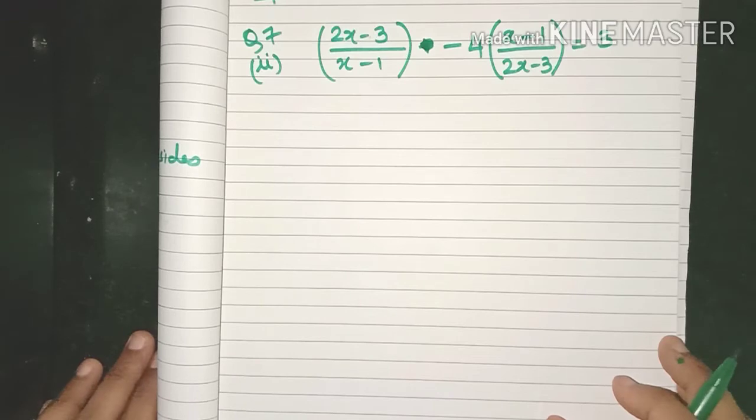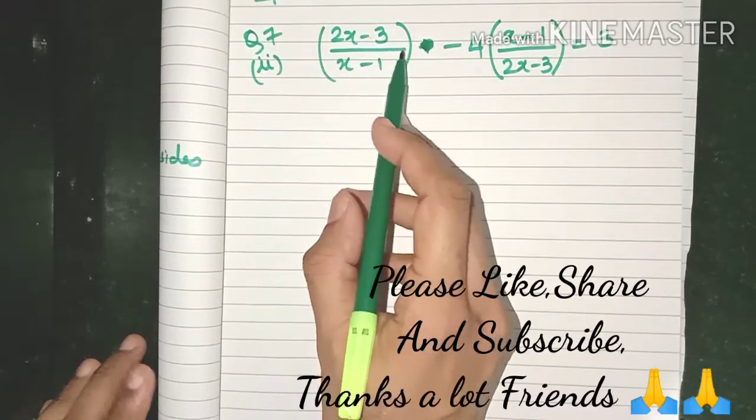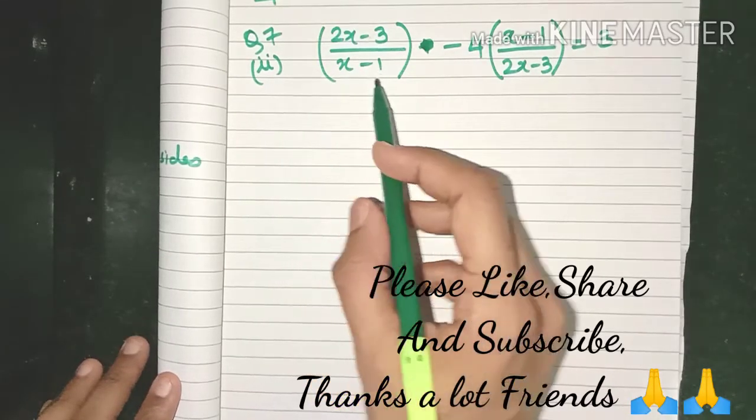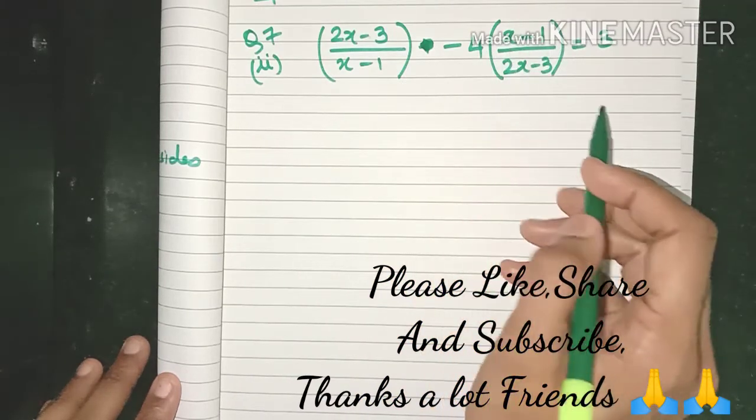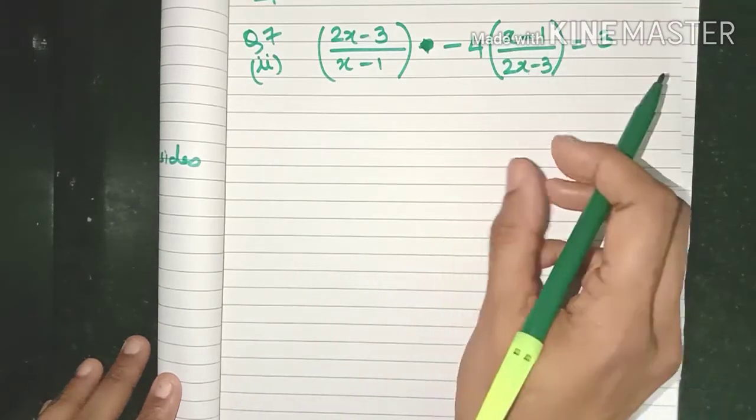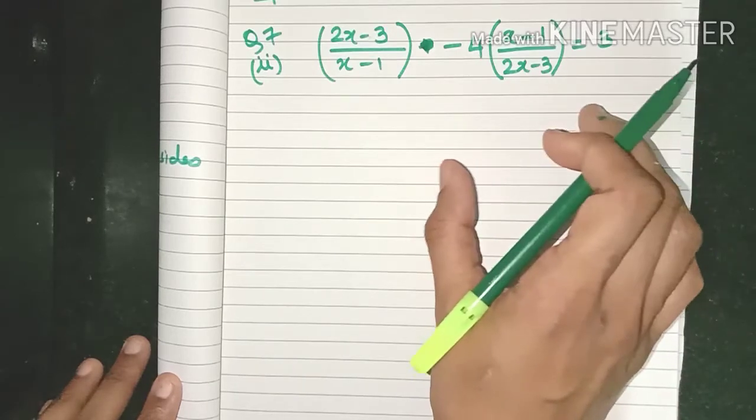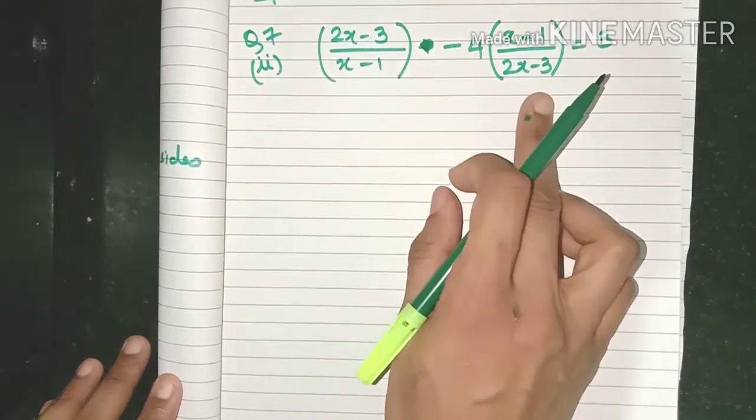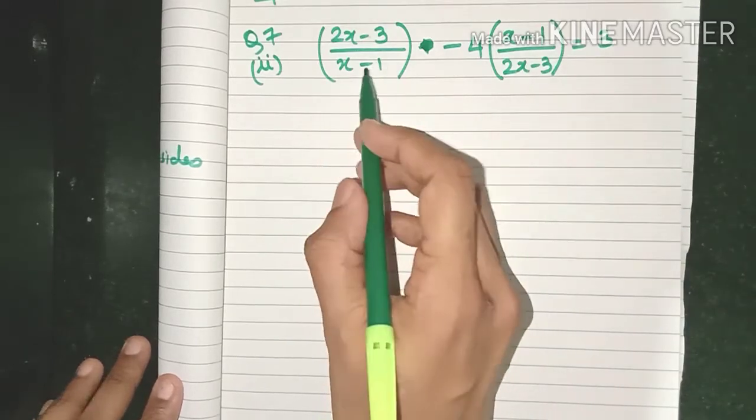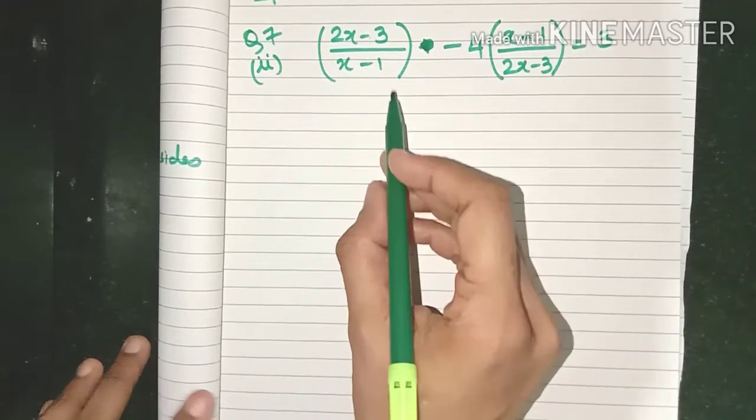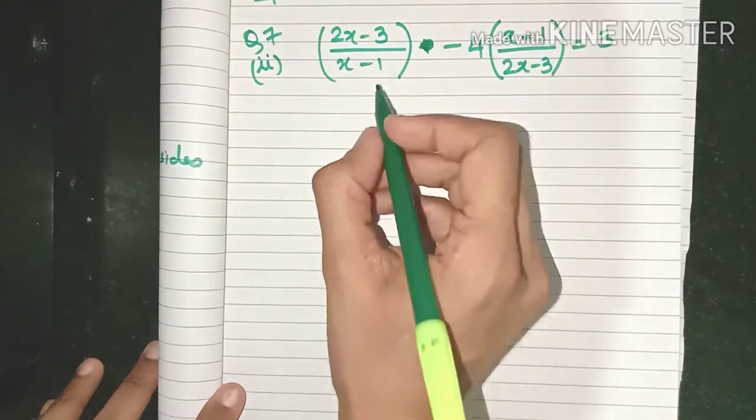Have a look at this equation. You can see (2x - 3)/(x - 1) and it's just the reciprocal here, (x - 1)/(2x - 3). It's such a complicated expression, we don't want to open this up. Instead, let's use substitution. Because there is something common in these two terms, we will use substitution method.